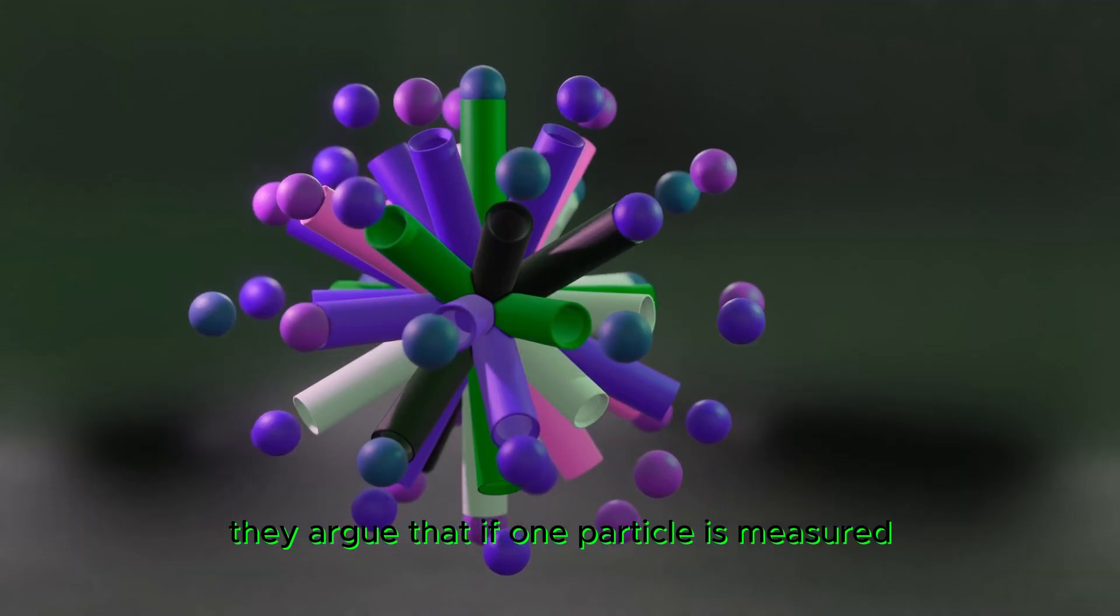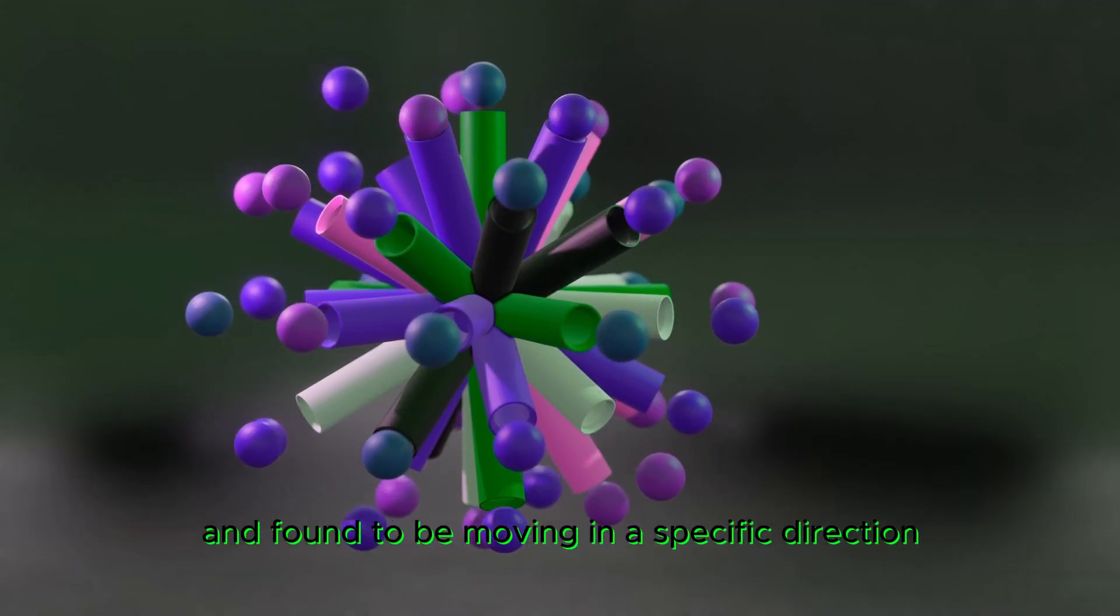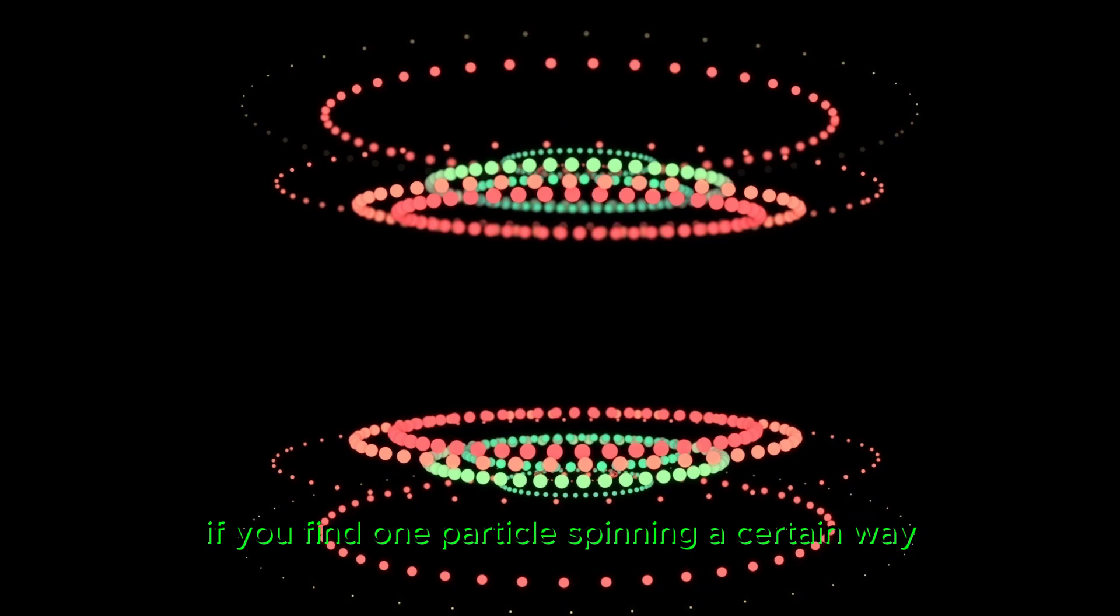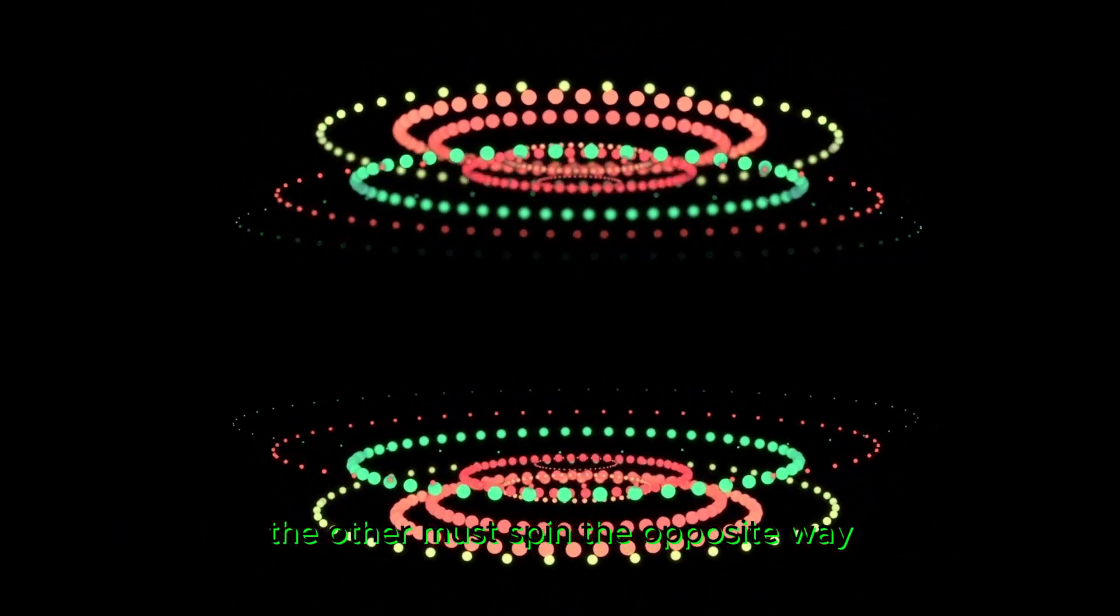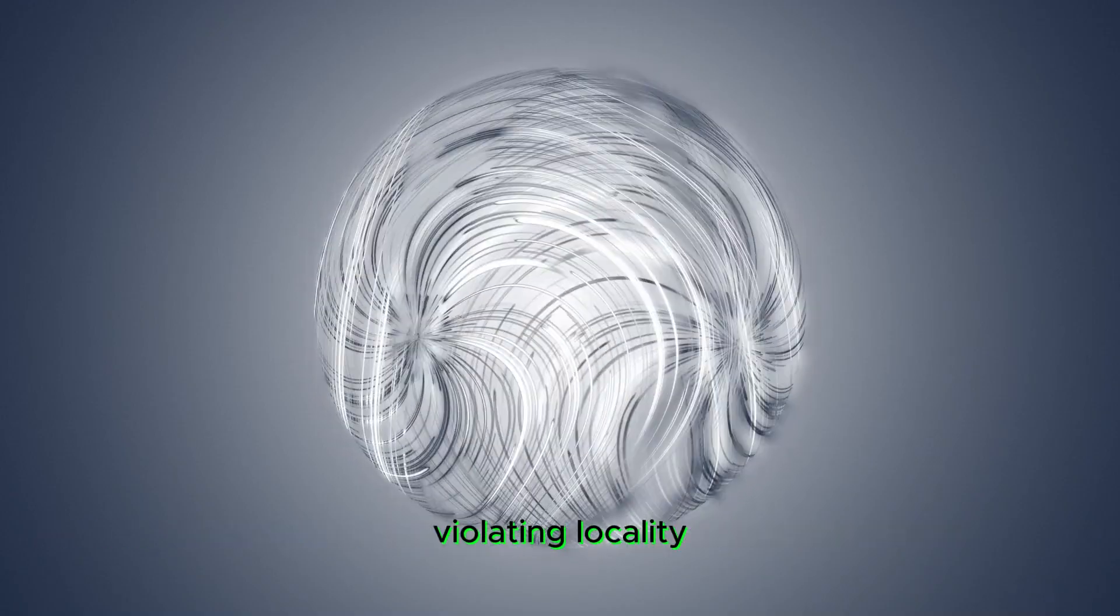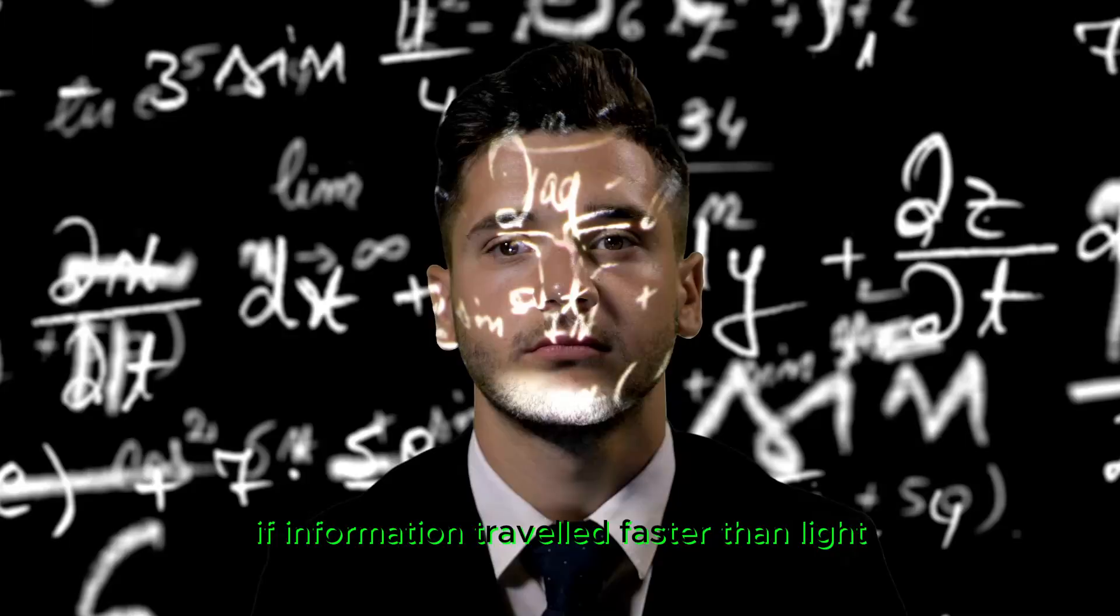They argued that if one particle is measured and found to be moving in a specific direction, the other must move in the opposite direction to conserve momentum. If you find one particle spinning a certain way, the other must spin the opposite way. This idea raised questions about how one particle could instantaneously communicate with its counterpart, violating locality if information traveled faster than light.